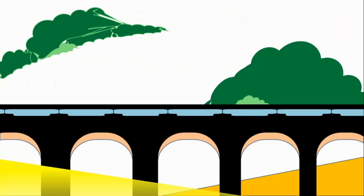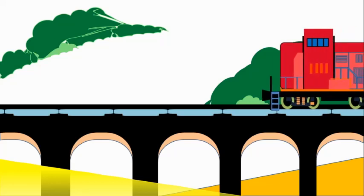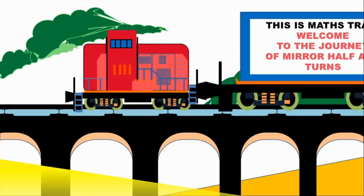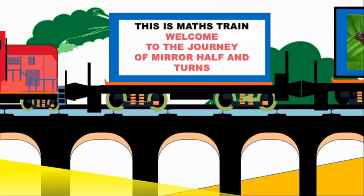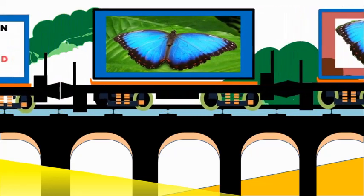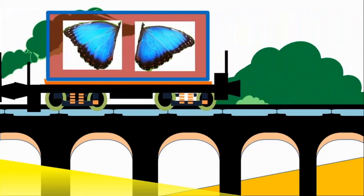Now look at this screen carefully. What do you observe? You observe a bridge — this is a railway bridge. Look at this picture carefully and just think in your mind: a train is moving and passing through this bridge. This train is made up of different types of shapes. You can see a rectangle here. This is a math train, and you will see one beautiful butterfly mentioned there.